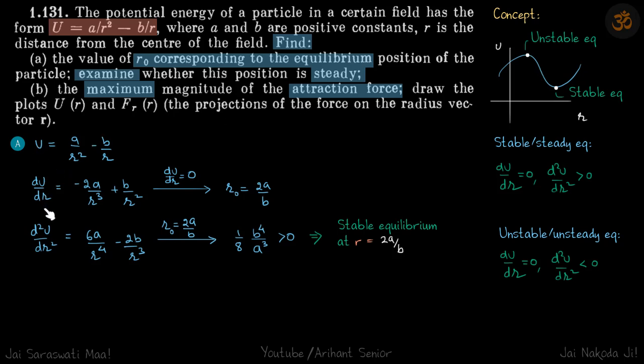Let's do dU by dR, which we will equate to zero to get the positions of maxima or minima. That happens at R₀ equals 2A by B. This is definitely the position of equilibrium.